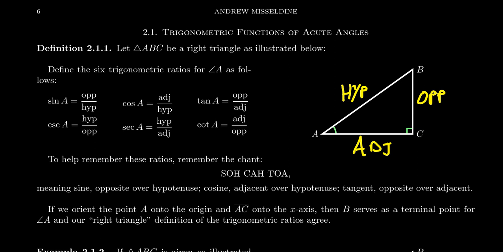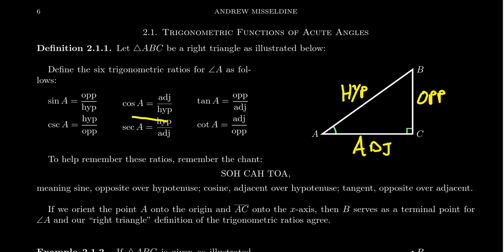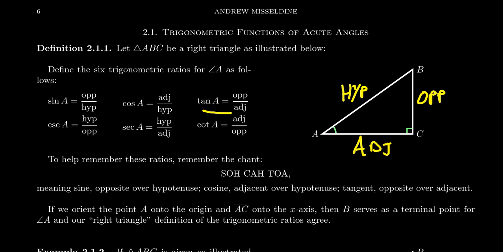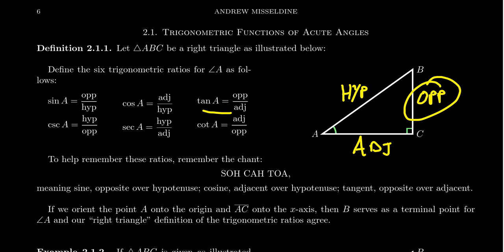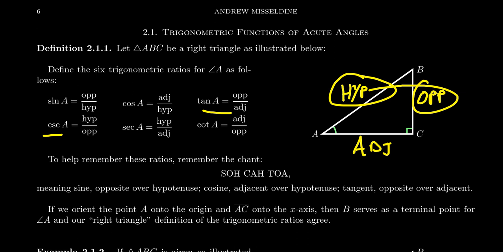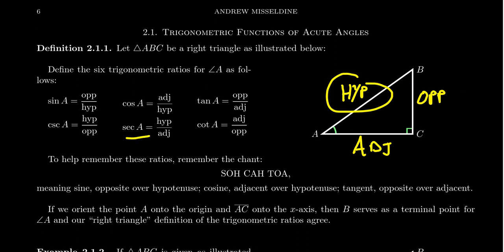For the trigonometric ratios of a triangle with respect to angle A, we use the following definitions. Sine is opposite over hypotenuse. Cosine is adjacent over hypotenuse. Tangent is opposite over adjacent — we're talking about the lengths of these sides. Cosecant is hypotenuse over opposite. Secant is hypotenuse over adjacent. And cotangent is adjacent over opposite. That gives us the six trigonometric ratios for a right triangle.